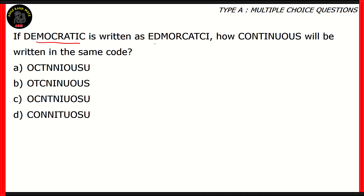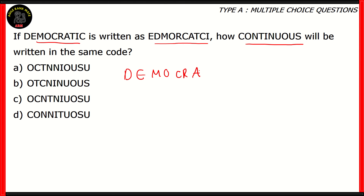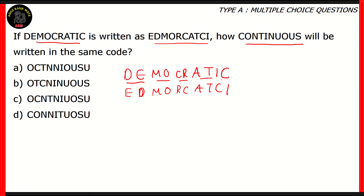Now let's look at the final question for today. If DEMOCRATIC is written as E-D-M-O-R-C-A-T-C-I, how will CONTINUOUS be written in the same code? To find this out, let's write DEMOCRATIC and its code: E-D-M-O-R-C-A-T-C-I. Now let's divide DEMOCRATIC into five pairs of coupled letters. So we have DE, MO, CR, AT, IC as our pairs, and let's give them numbers as well.